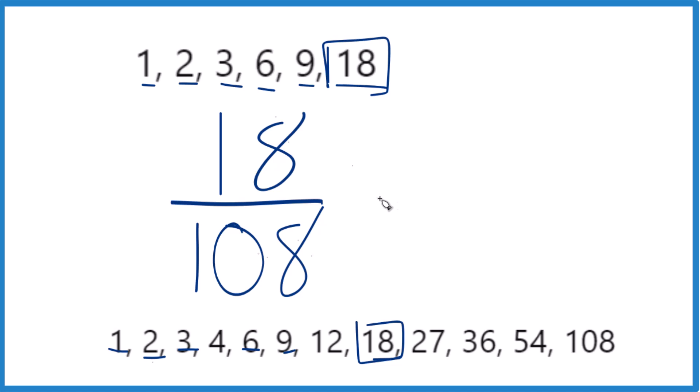So what we'll do is we'll divide 18 by 18, and that'll give us 1. Then we divide 108 by 18. We get 6. So when we simplify the fraction 18 over 108, we get 1 over 6. And we can't simplify this any further.